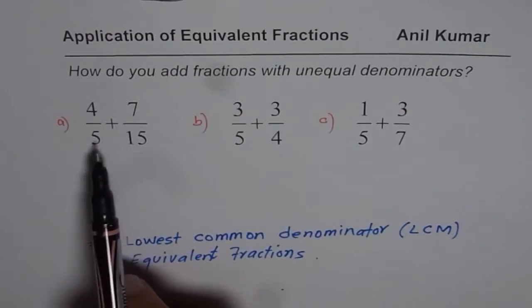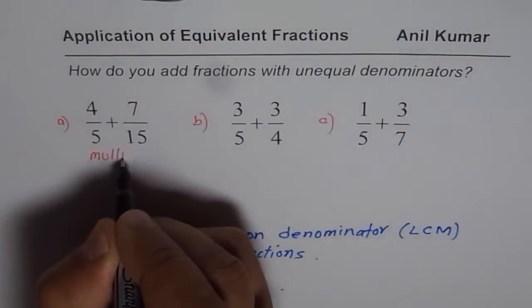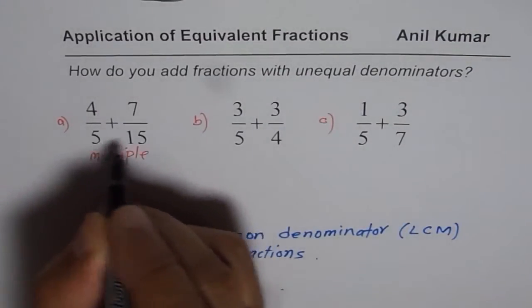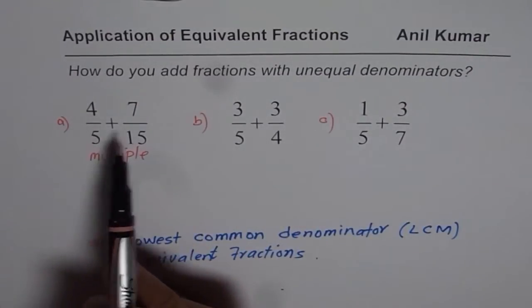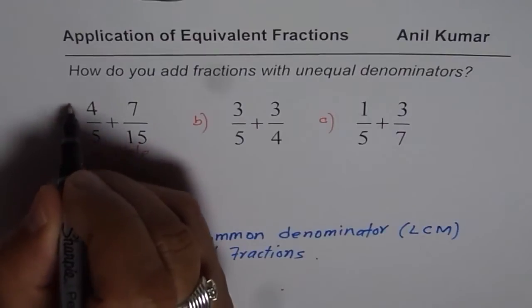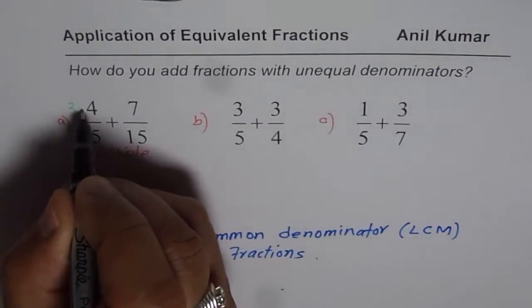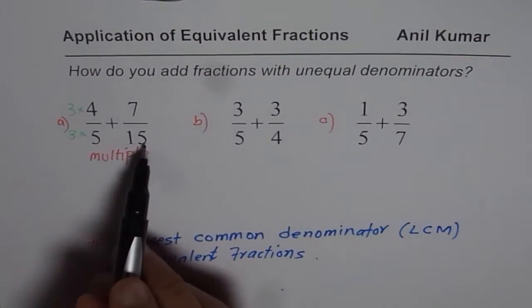Here, 15 is multiple. So in this case, we have a multiple. Multiple really means five times three is multiple. So we have to change only one of them, not both of them. How do we change it? We can multiply both numerator and denominator by three and get equivalent fraction with same denominator.